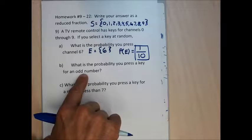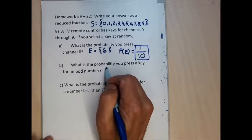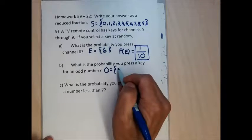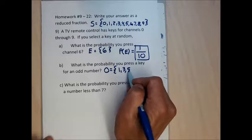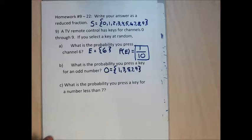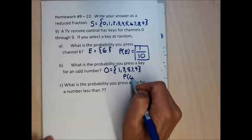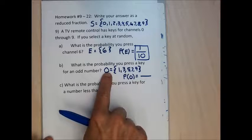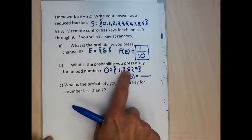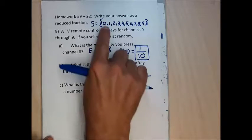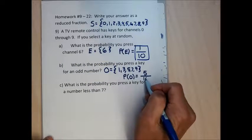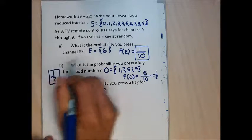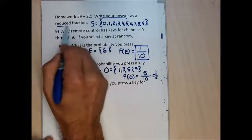For part B, the probability of picking an odd number: create event O = {1, 3, 5, 7, 9} — five odd numbers. P(O) = 5/10, which reduces to 1/2.